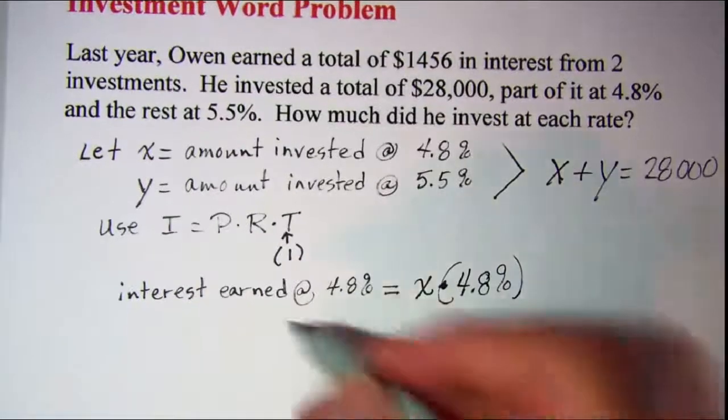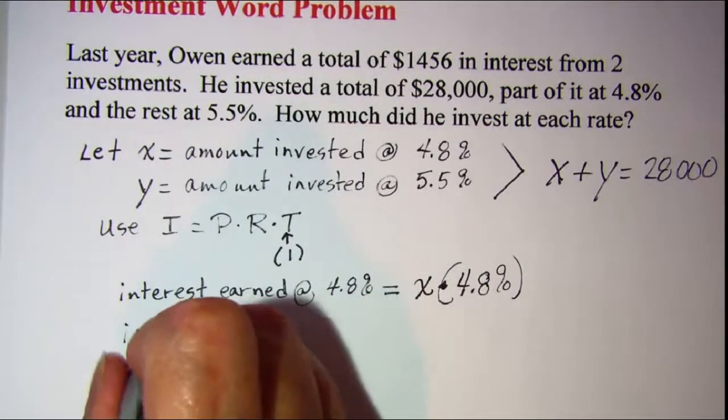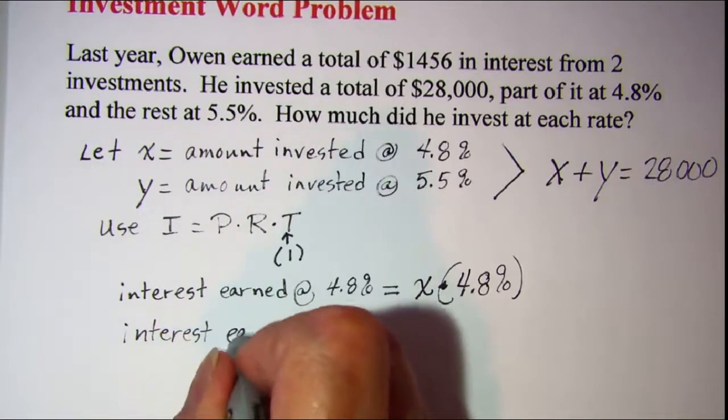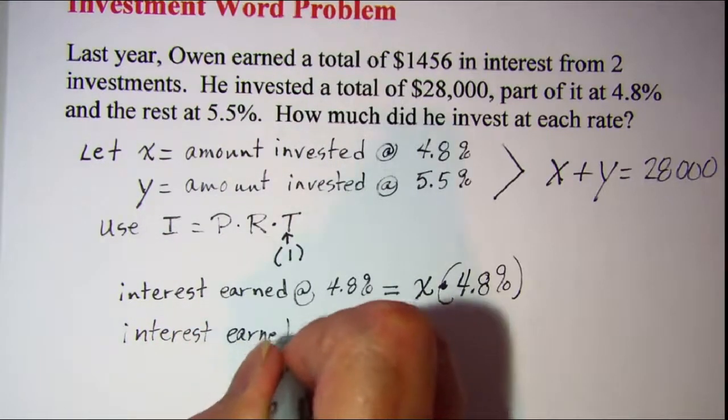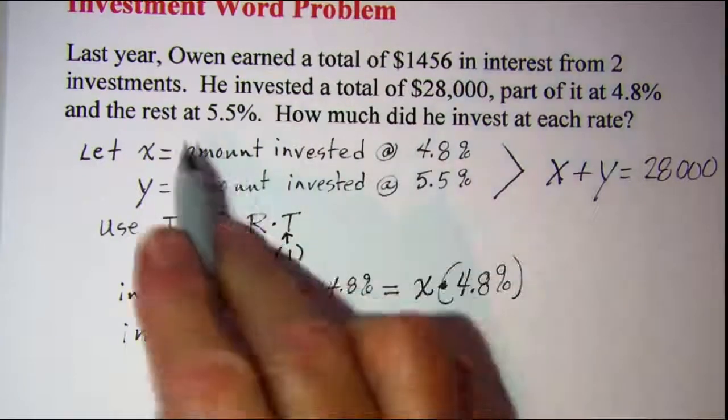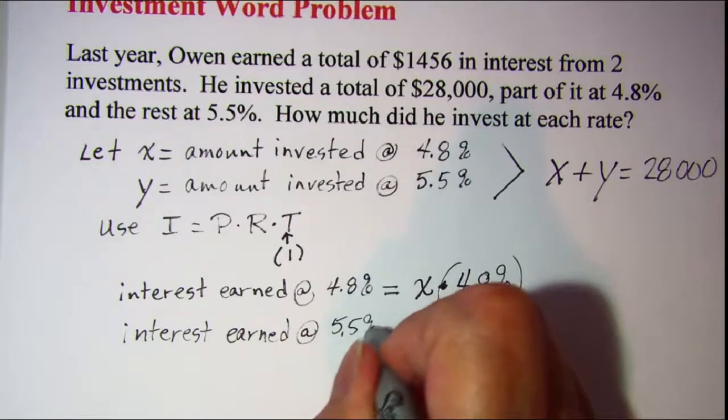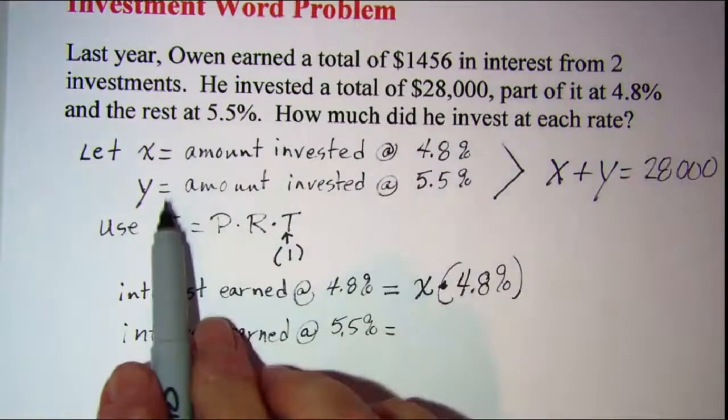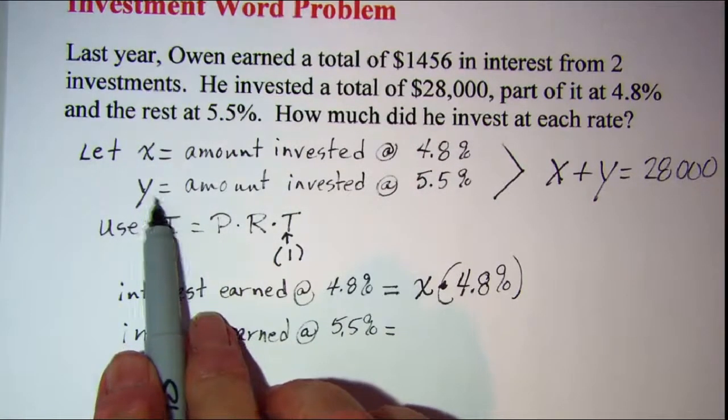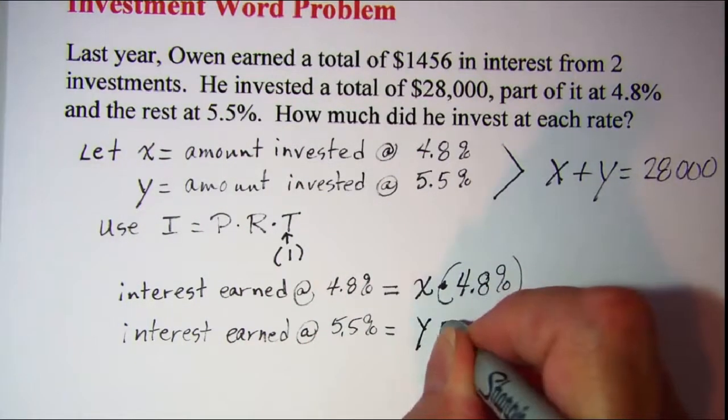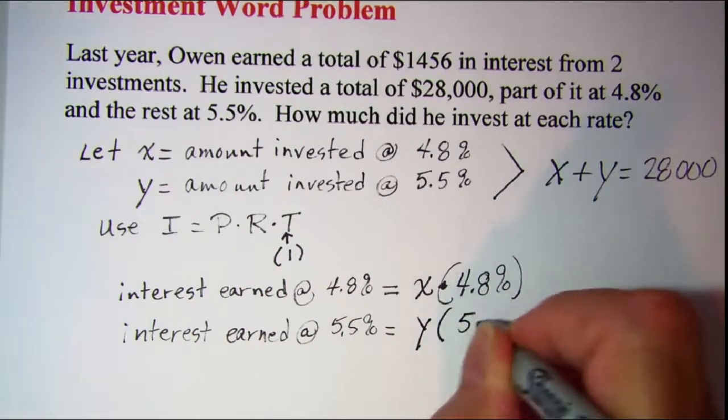The interest earned at 5.5% will be that principal which is y. We invested y dollars at 5.5%.